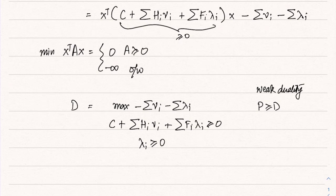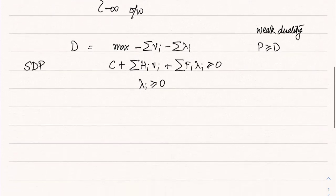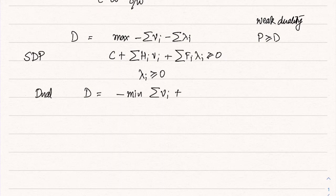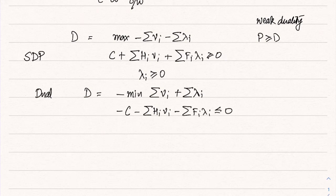Now we will take the dual once more. The dual in this case is a convex SDP. We write it in standard convex form: minimize Σ ν_i + Σ λ_i (with a minus taken outside), subject to −C − Σ H_i ν_i − Σ F_i λ_i ⪯ 0, and −λ_i ≤ 0 (kept implicit). Now we write down the Lagrangian of this form.